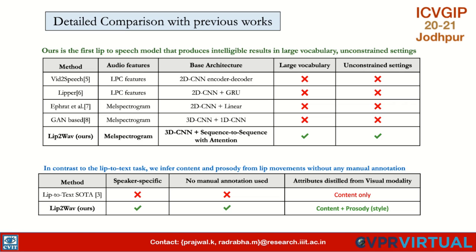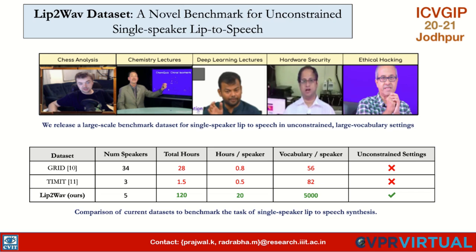Our problem is arguably more challenging than lip-to-text, since we need to infer prosody and content, compared to only content for lip-to-text. Text-to-speech networks generally require around 24 hours of data per speaker for generating high-quality speech. Since we use a TTS-inspired network, we also had to create datasets at a similar scale.